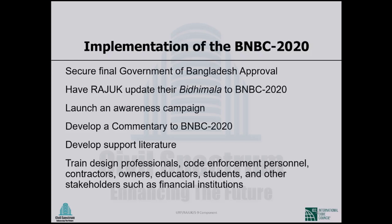We need to develop a commentary to the 2020 edition of the Bangladesh National Building Code. Almost every practitioner we talked to pointed out the importance of this. In the US, we cannot even think of using ACI 318 without its commentary — this is a crying need. However, this will have to be postponed until Phase 2 of the URP, which the World Bank will hopefully fund. We also need to develop support literature such as design examples — there is a very significant need for that.